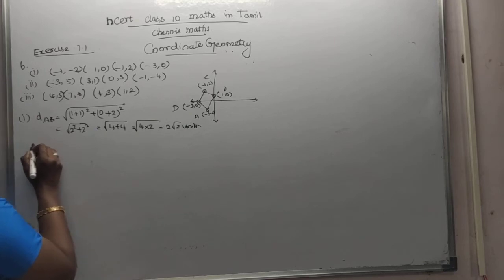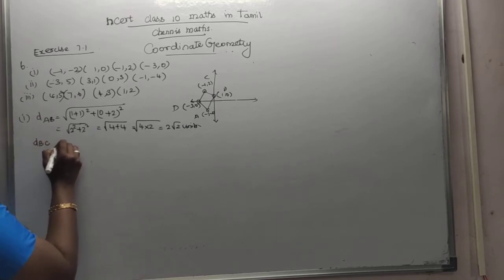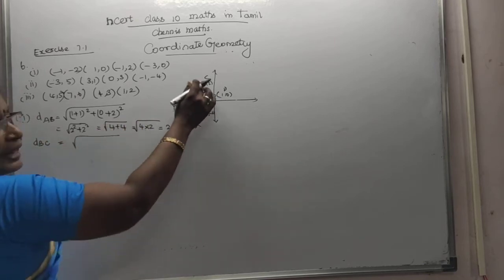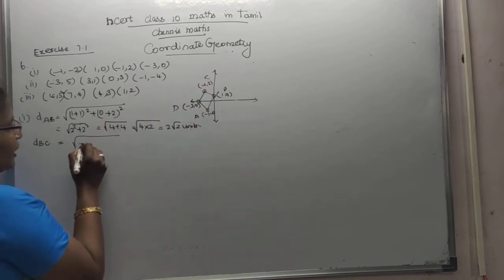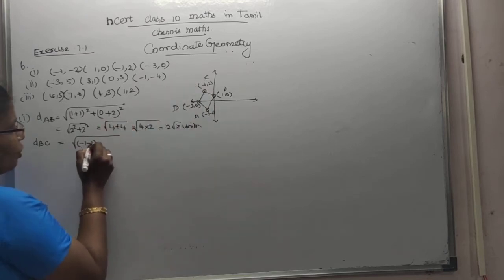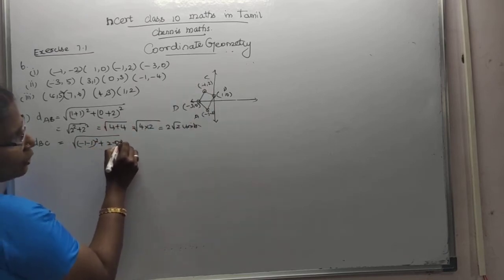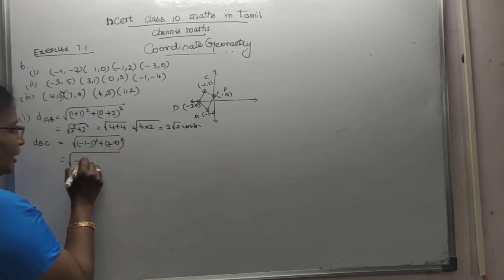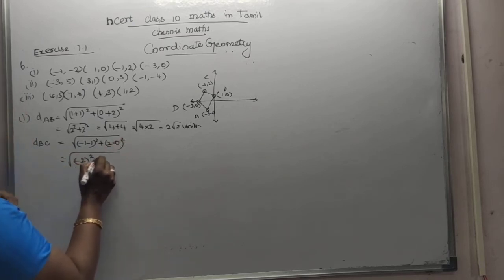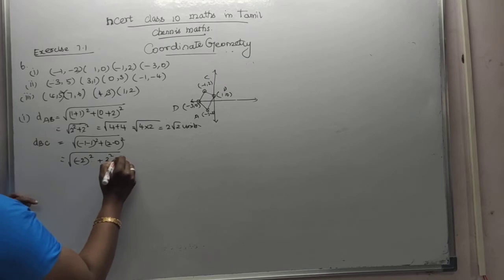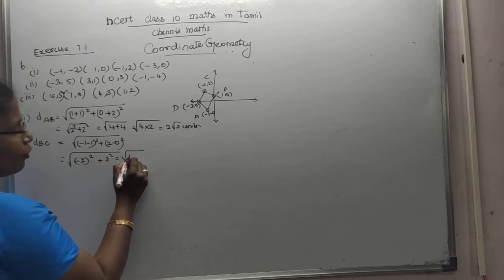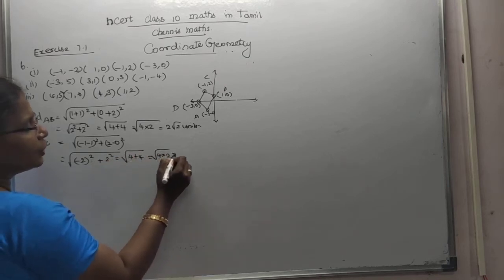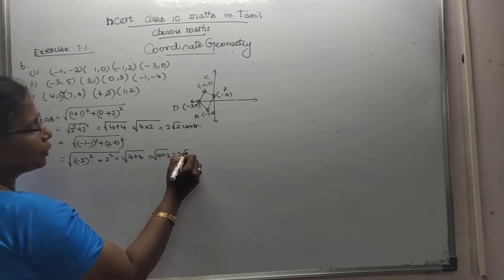Next one is distance of BC. That is root of (minus 1 minus of minus 1) whole square plus (2 minus 0) whole square. That is 0 squared plus 2 squared. That is equal to root of 4 plus 4, which is equal to 2 root 2 units.